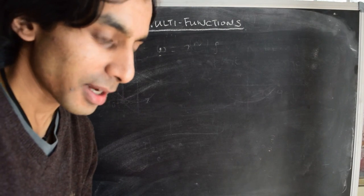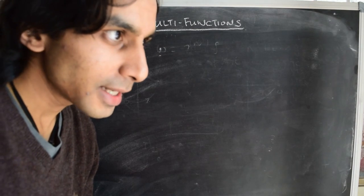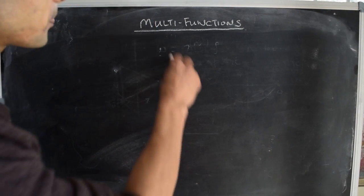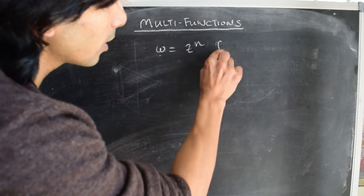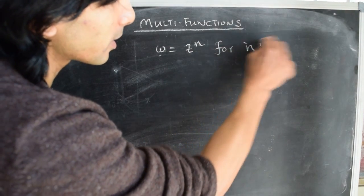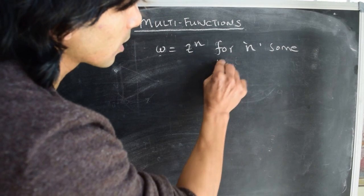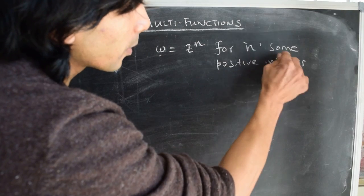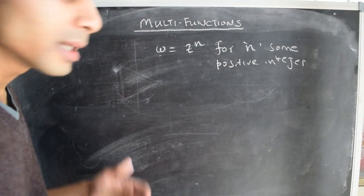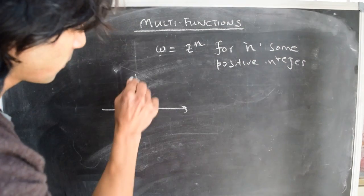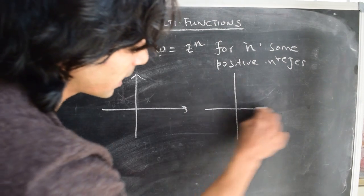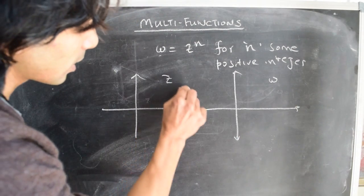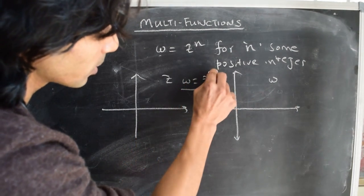Hi there. It's been a while since we talked about complex functions. In the previous video, we started talking about functions of the form w equals z to the power of n, for n some positive integer. We explored this mapping for the specific case where we looked at the z-plane and the image w-plane, where w goes as z to the power of n.